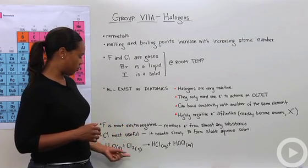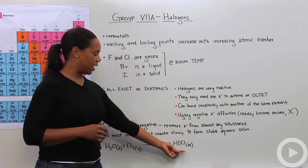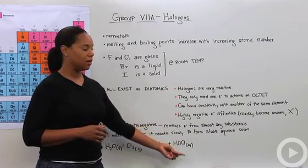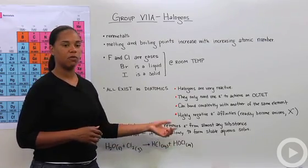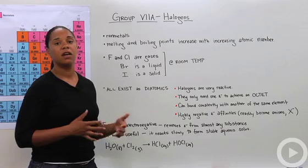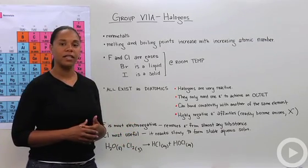This equation at the bottom here, with water reacting with chlorine gas to form hydrochloric acid and hypochlorous acid, this is a common reaction for the disinfectants that we use to put into our pools and that we sometimes see in our water to keep things clean. And that is halogens.